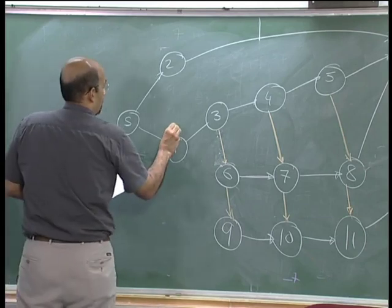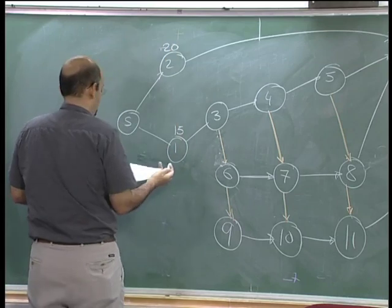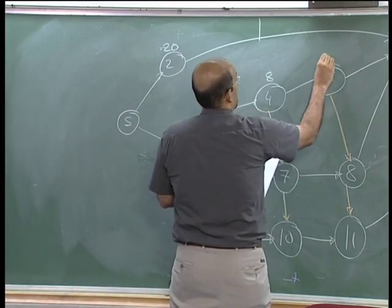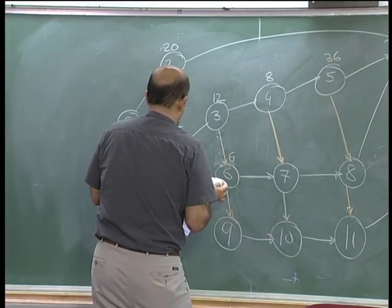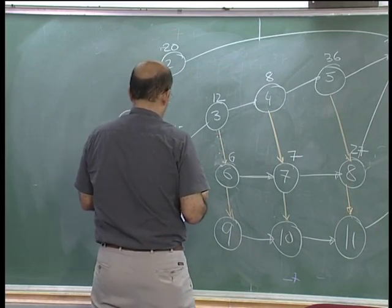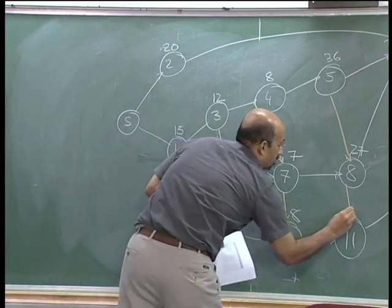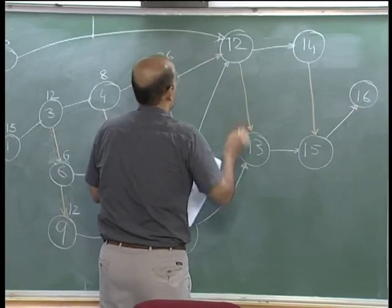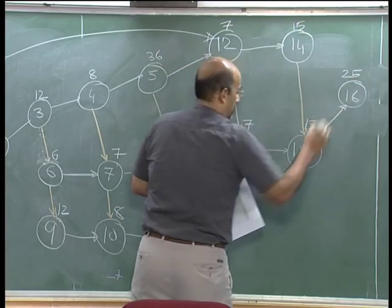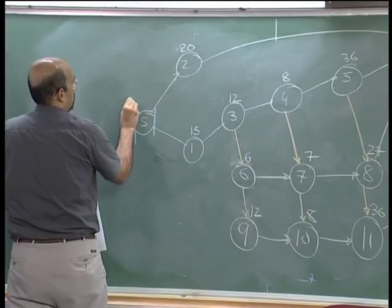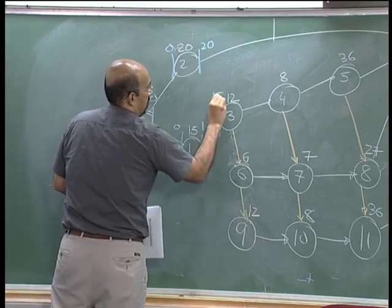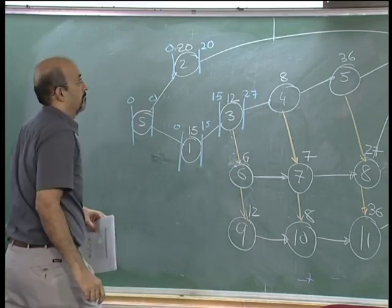We have 15, 20, 12, 8, 36, 6, 7, 27. So this is going to be 15, 20, 12, 8, 36, 7, 7. Let us go through the 0, 0.